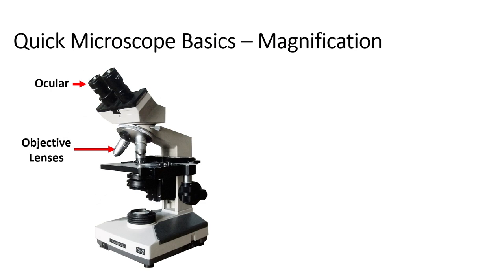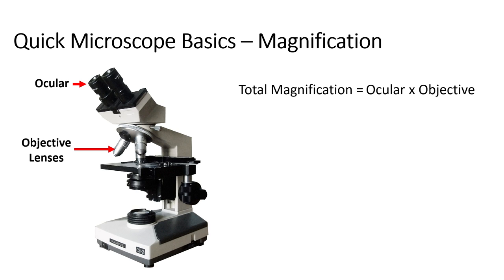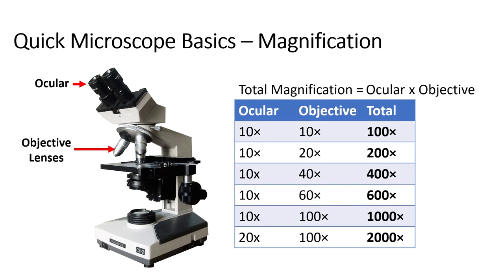In terms of magnification, there are really only two parts of the microscope that matter: the oculars and the objective lenses. The total magnification of your microscope is determined by the magnification of the ocular lens times the magnification of the objective lens. So for example, if we have a 10x ocular and a 10x objective, we have 100x total magnification.